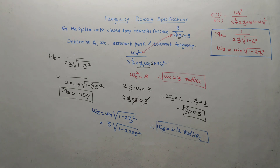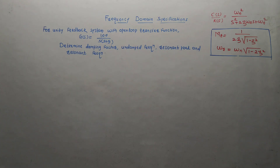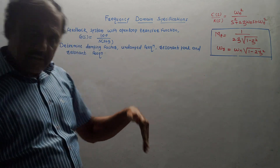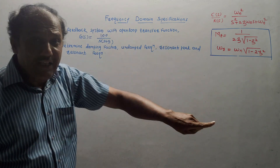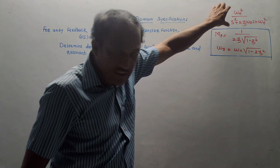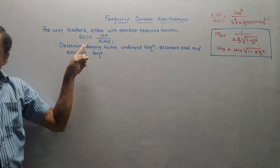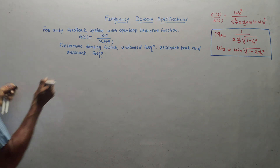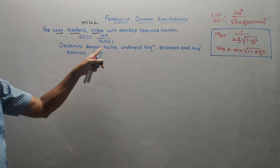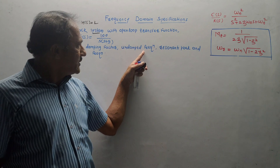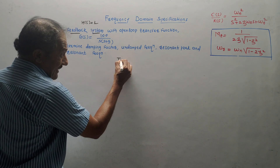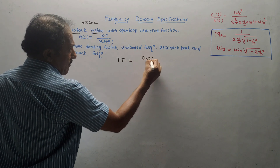Now let us solve a different variation. Next problem: for a unity feedback system with open-loop transfer function G(s) = 100 upon s(s+9). Notice the difference — in the last problem the closed-loop transfer function was directly given, but in this case the open-loop transfer function G(s) is given. Since it is a unity feedback system, H(s) = 1. Determine: damping factor ζ, natural frequency ωn, resonant peak Mr, and resonant frequency ωr.